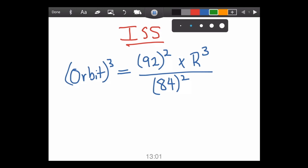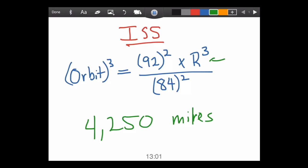Okay, so here's the ISS problem. The orbital time, or the orbital distance for the ISS to the cubed is 92 squared times the radius of the Earth cubed divided by 84 minutes squared. And the answer for that, if you take the cube root, will be 4,250 miles. As the radius of the Earth is 4,000 miles, that means the ISS is approximately 250 miles above the surface of the Earth in a low Earth orbit.